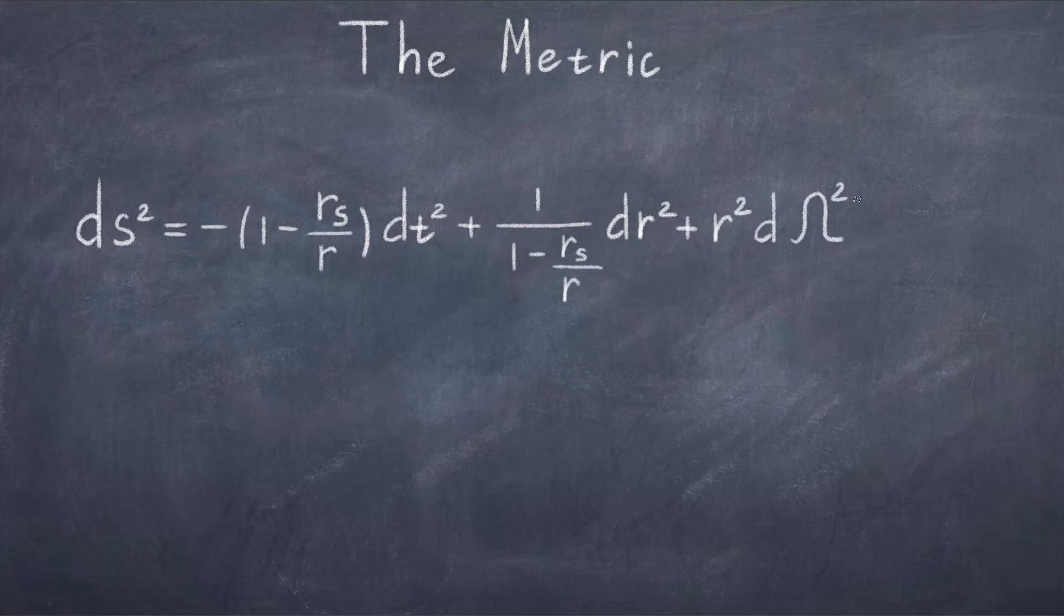Writing the metric in terms of alignment is equivalent to writing it as a matrix. Since we are in general relativity, we are dealing with spacetime, or in other words, four dimensions.